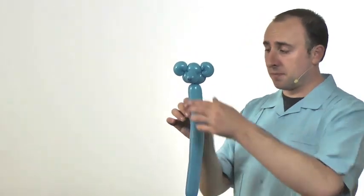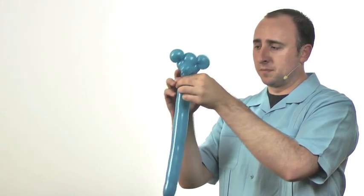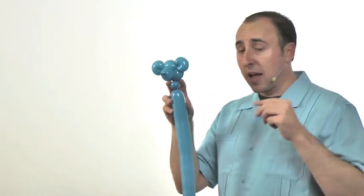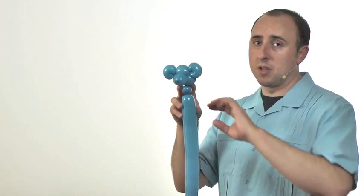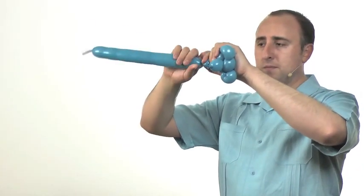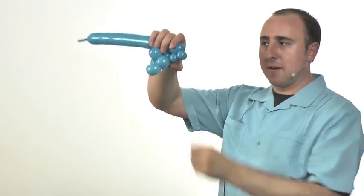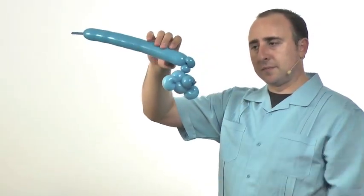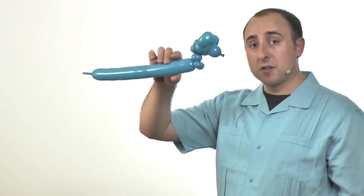Next step we do is the neck. Twist a small bubble, about half an inch. Now the next step is that I like to do, but it is optional. It's up to you. I add a pinch twist after this to help position the neck later on. So we're going to twist another small bubble, about half an inch, and we're going to pinch twist that by folding it over and pinch twisting it. And that helps the neck sit however I want it to do.